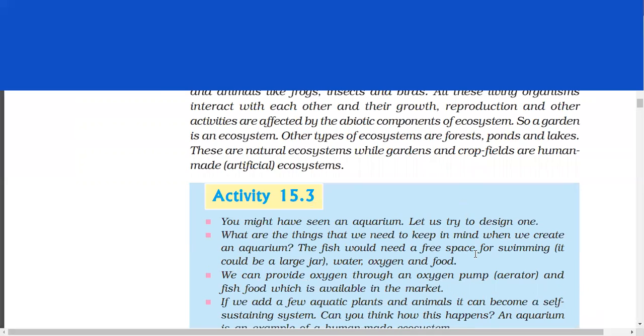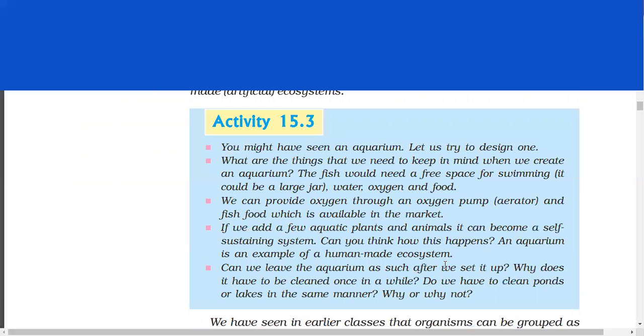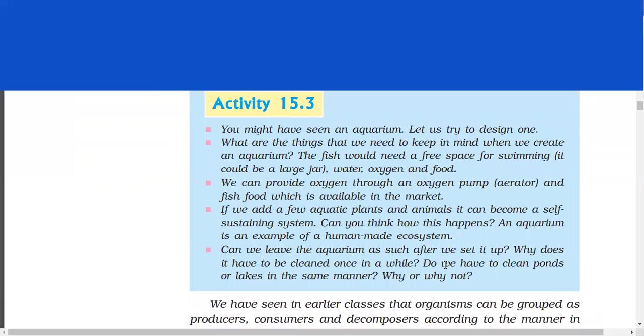Other types of ecosystems are forests, ponds and lakes. These are natural ecosystems while gardens and crop fields are human made or artificial ecosystems. Activity 15.3. You might have seen an aquarium. Let us try to design one. What are the things that we need to keep in mind when we create an aquarium? The fish would need a free space for swimming. It could be a large jar, water, oxygen and food. We can provide oxygen through an oxygen pump which is aerator and fish food which is available in the market. If we add a few aquatic plants and animals, it can become a self-sustaining system.